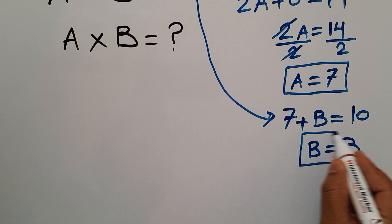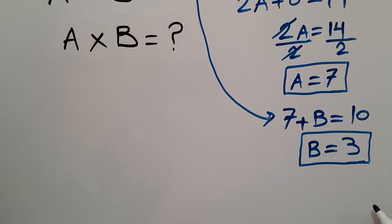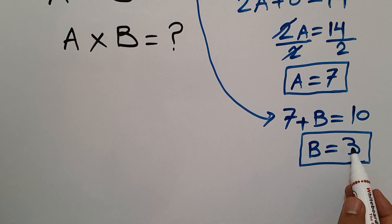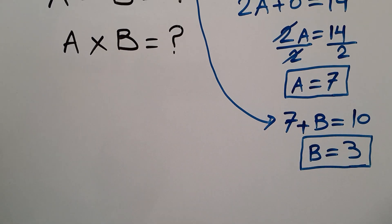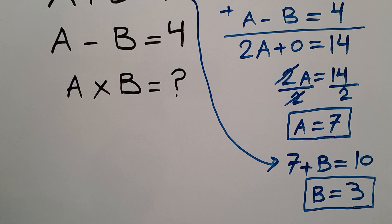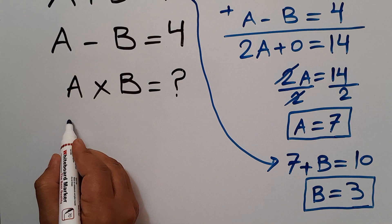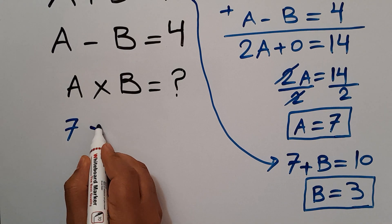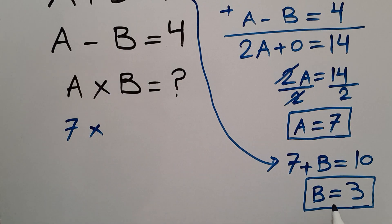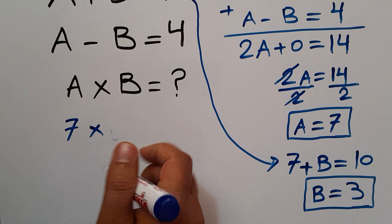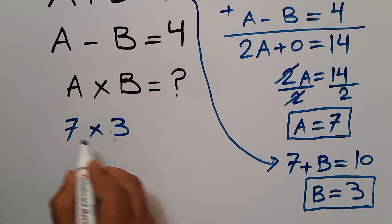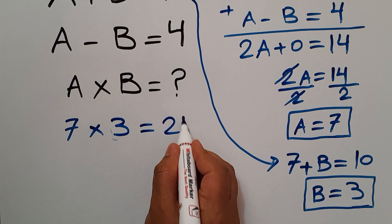B is 3. A is 7 and B is 3. Now let's plug these two values into the third equation. A times B. A is 7, so 7 times B. B is 3, times 3. 7 times 3 equals 21.